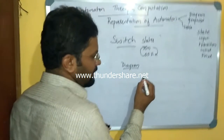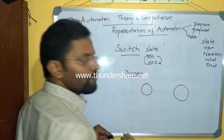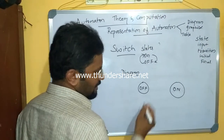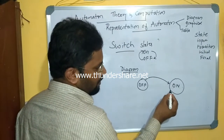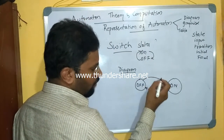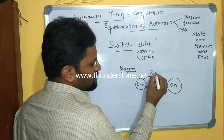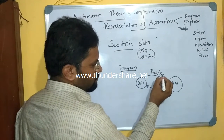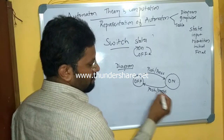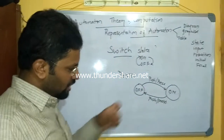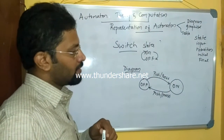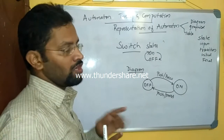I could draw this as: states are represented by circles, so I have a state 'off' and a state 'on'. There is a change of state from off to on, and from on to off — triggered by some input symbol, either 'press' or 'push'. You can clearly understand there is a change of state from off to on on some external input, and remember there is a change of state only on some input.